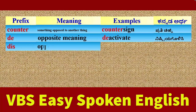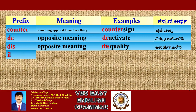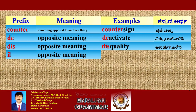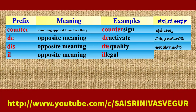Prefix 'Dis': its meaning is 'opposite meaning'. Example: Disqualify. Kannada meaning: Anarha Goli. Prefix 'Ill': its meaning is also 'opposite meaning'. Example: Illegal. Kannada meaning: Kanonu Bahira — outside the law.